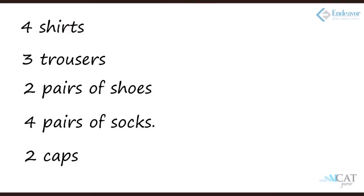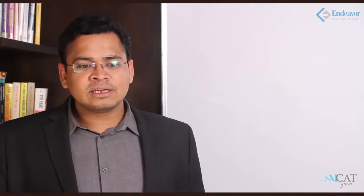Rather, let's think more logically. If there are two caps, wearing a cap is not compulsory — I could pick the first cap, the second cap, or not pick a cap at all. So for the same cap, there are three ways, which is n plus one. Similarly, if there are two pairs of shoes and wearing is not compulsory, that's three ways for shoes. Going back to the full problem — four shirts, three trousers, two pairs of shoes, four pairs of socks, two caps — where shoes, socks, and caps are not compulsory, I add one to each. The final answer is four into three into three into five into three.